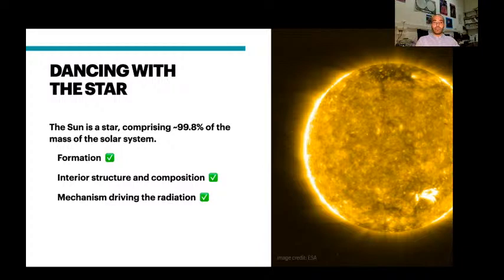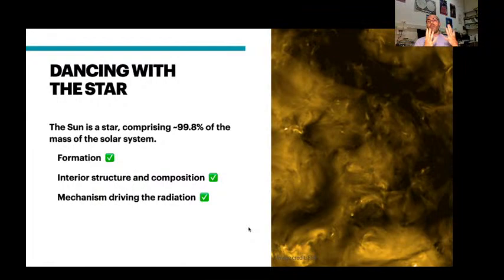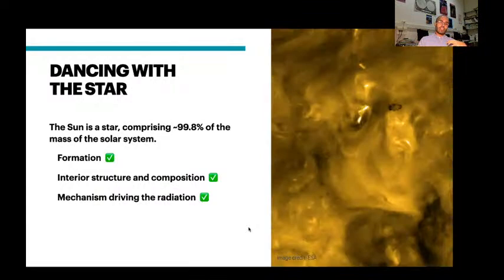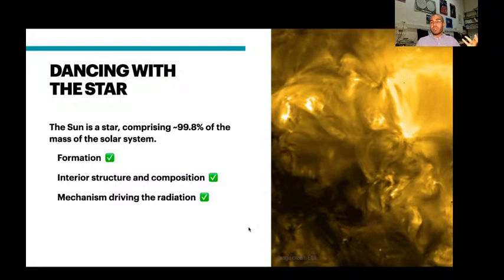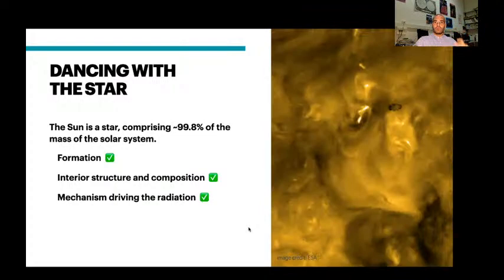Let's start from the sun, the star of our solar system. The sun is a star, you can see it here on the right. It's the largest body in the solar system and it comprises 99.8% of the mass of the solar system. The rest of the planets and all the minor bodies is only 0.2%. Here you can see some close-ups of the sun. Actually we know many things about the sun and we learn this by looking at other stars in the sky. We know how it formed, the interior structure and composition, the mechanism driving the radiation which is currently studied at high school.